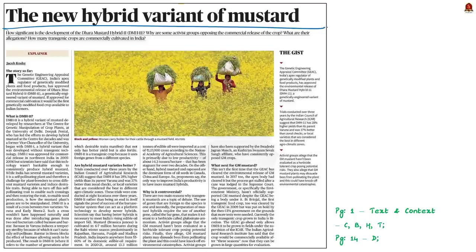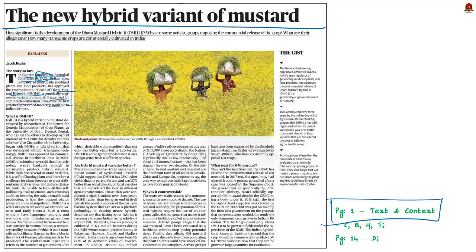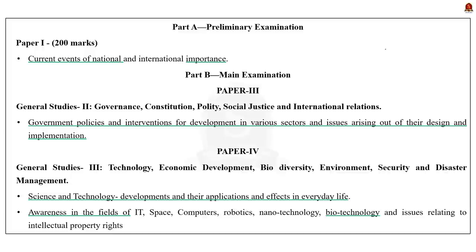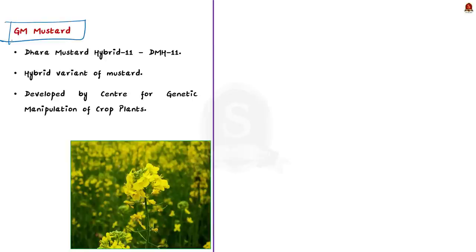This article from Text in Context says that India's apex regulator of genetically modified plants and food products has approved the environmental release of Dhara Mustard Hybrid-11 (DMH-11). If approved for commercial cultivation, it would be the first genetically modified food crop available to Indian farmers. DMH-11 is a hybrid variant of mustard developed by researchers at the Centre for Genetic Manipulation of Crop Plants at the University of Delhi.